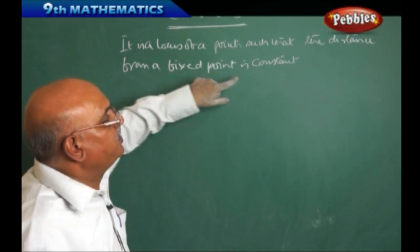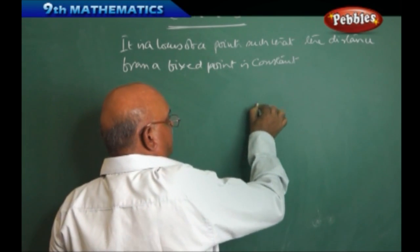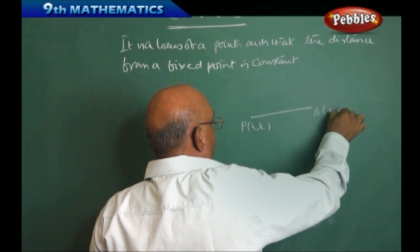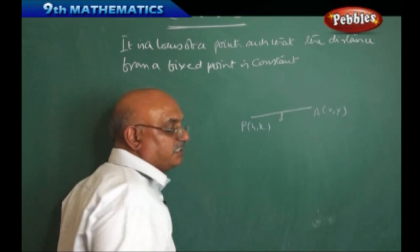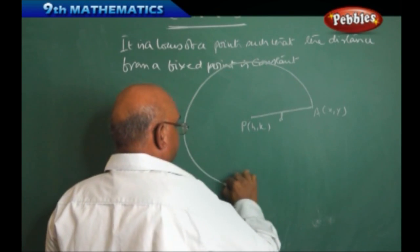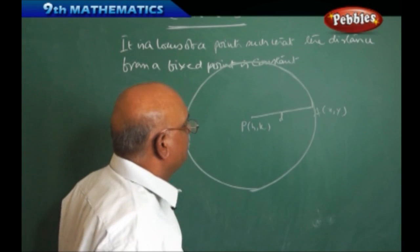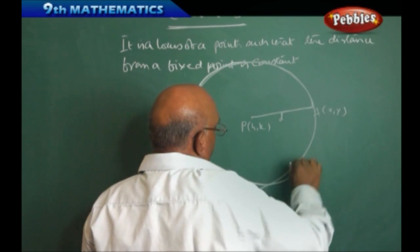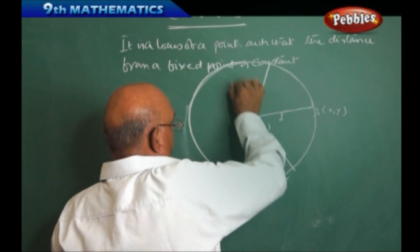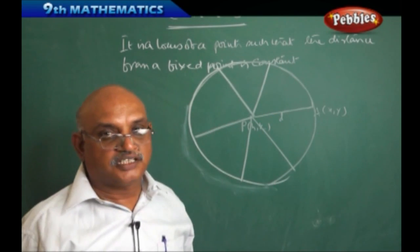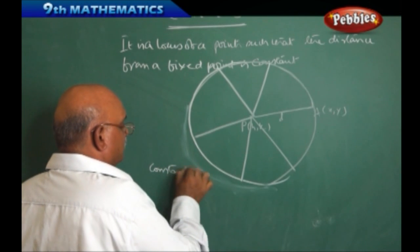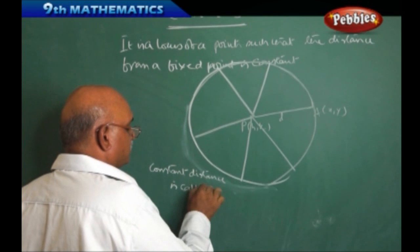Suppose if I take a point P(H, K) and another point A(X, Y), the distance from here to here is fixed. That implies the point is moving around this fixed point, and we are going to get a path. If you see the path carefully, the distance from the fixed point is always the same — it is a constant distance.